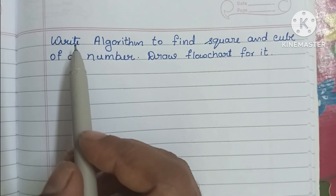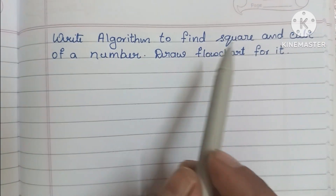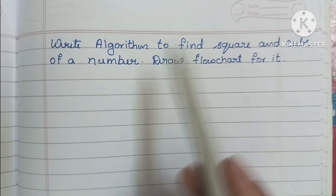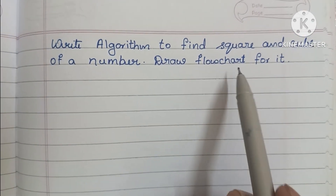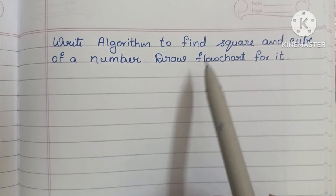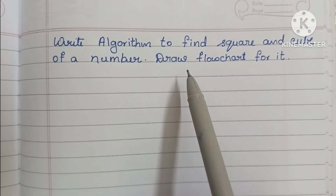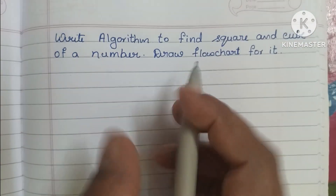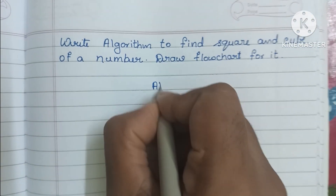Hi guys, in this video we are going to learn how to write an algorithm to find the square and cube of a number, and draw a flowchart for it. Here we have to find square and cube of a number. Let's write the algorithm.